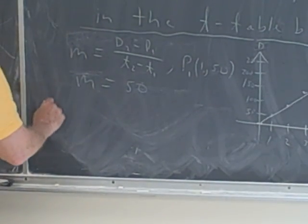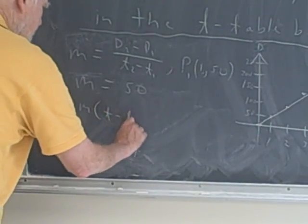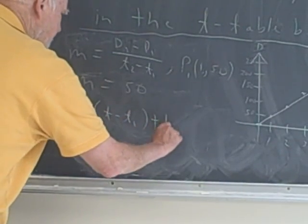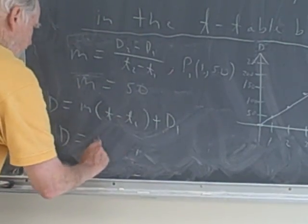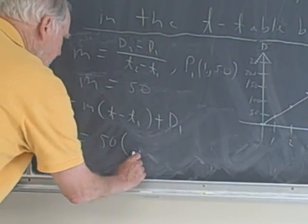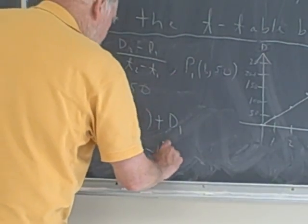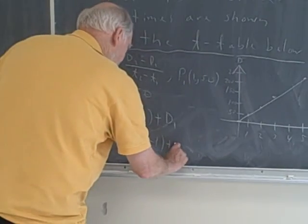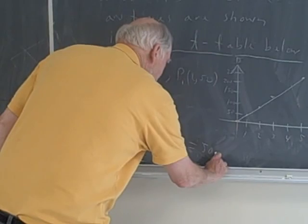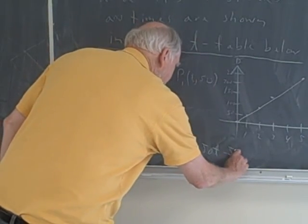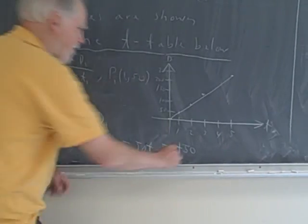And now I can simply use d equals m times t minus t1 plus d1, right? And so d equals m, which is 50, times t minus t1, which is 1, plus 50. And it's pretty clear that this equals 50t minus 50 plus 50. And of course, that just equals 50t.